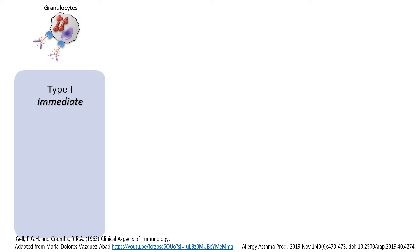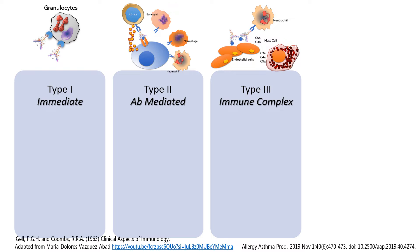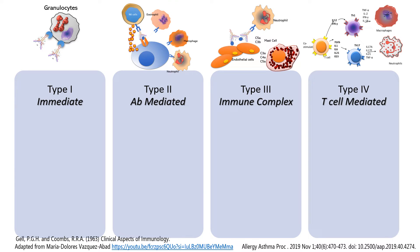According to the Gell and Coombs classification, type 1 hypersensitivity is an immediate reaction mediated by granulocyte activation. Type 2 is antibody-mediated under several different effector cells. Type 3 requires the formation of immune complexes, and type 4 is T cell-mediated.